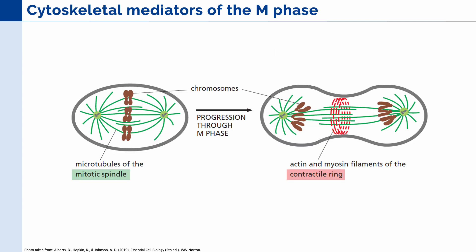In this figure, we can see that it is actually cytoskeletal elements that are the mediators of our M phase. In mitosis, the microtubules are the main mediators, and they form a structure called the mitotic spindle. Meanwhile, during cytokinesis, you have actin and myosin filaments, which form a structure called the contractile ring.